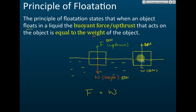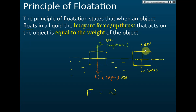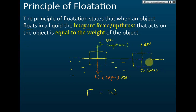When more water is displaced, the upthrust increases — say from 20 N to 40 N. But 40 N is still less than the weight of 50 N, so the object continues moving down, displacing more water, increasing the upthrust further — from 40 N up to 50 N. When the upthrust equals the weight, the object stops moving and achieves equilibrium.